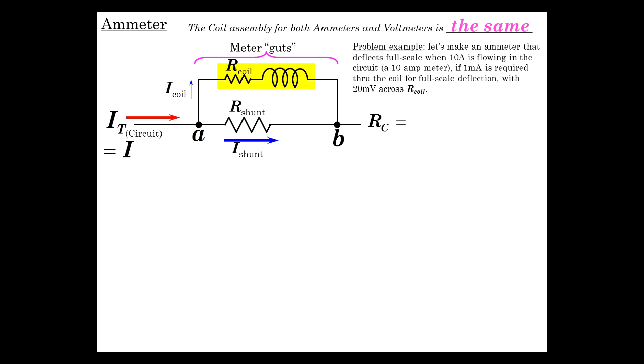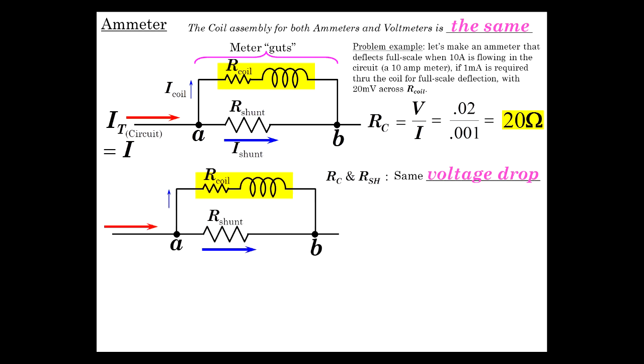So what is the coil resistance then? The resistance of the coil is just the volts over the current. 20 millivolts over 1 milliamp is 20 ohms. So now we know how much resistance the coil has. It's 20 ohms. Now because this coil is in parallel with the shunt resistor, their voltage is the same. So that's going to help us to do a calculation.